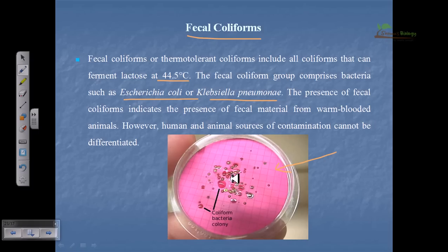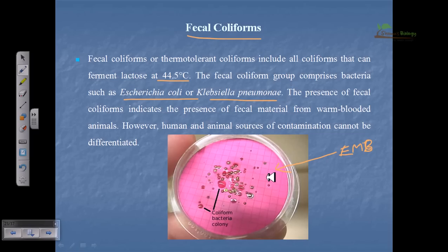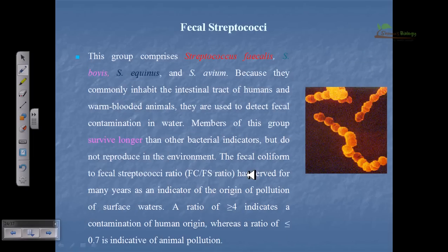Here is an example of the plate used to cultivate coliform bacteria and find their typical colonies. This plate is called the Endo agar or EMB (eosin methylene blue) agar. If we plate coliforms or fecal coliforms on EMB agar, we can find pink colonies with a green metallic sheen on top — this suggests the colony is a fecal coliform.